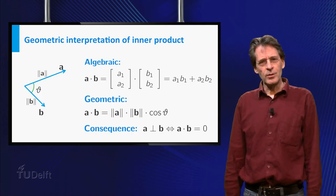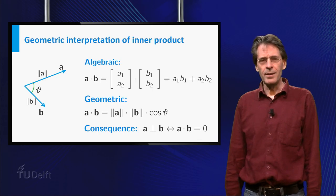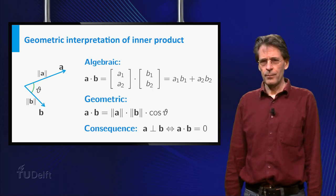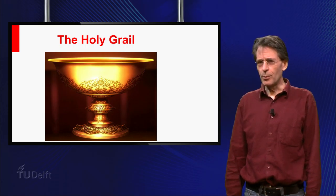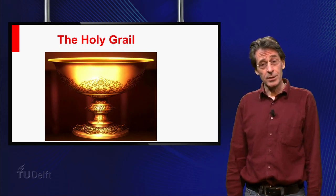The generalization of length, distance and perpendicular to Rn is straightforward. The holy grail here, the concept that provides it all, is the inner product.